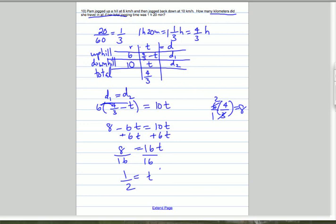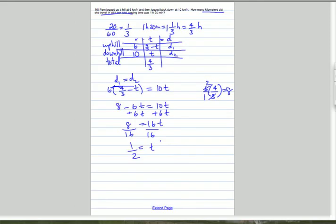That means it took half an hour to go downhill, because that's what T represented for the time that it took to go downhill. So if we do 10 times a half, that's 5 kilometers to go downhill, which should be the same as going uphill. So 5 kilometers downhill, 5 kilometers uphill. So total distance is 10. 5 plus 5 is 10, so that's 10 kilometers.